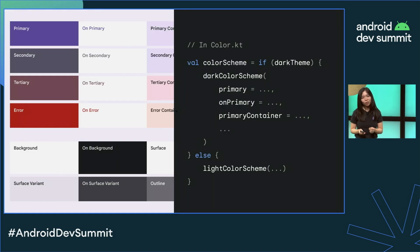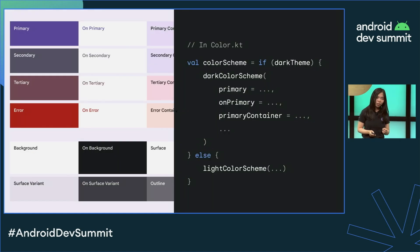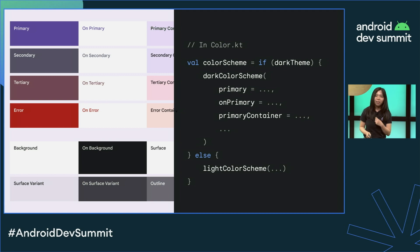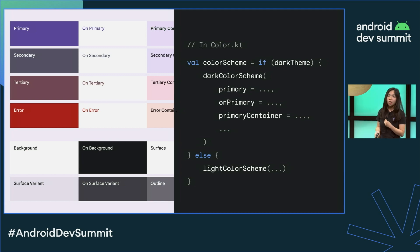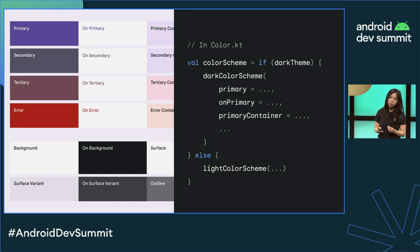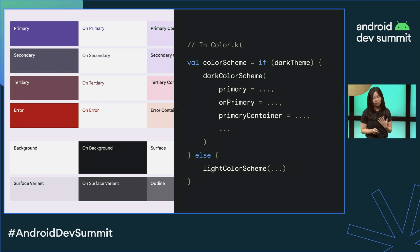The foundation of a color scheme is a set of key colors: primary, secondary, tertiary, error, and neutral. The color scheme provides a set of color roles needed for expressing interaction states, errors, and accessible contrast.